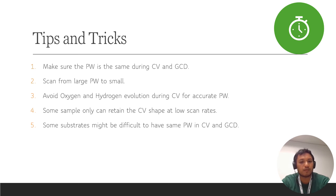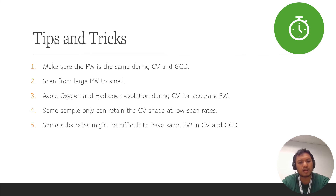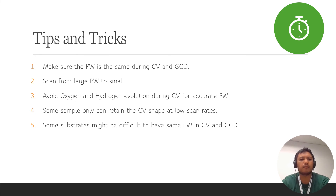Tip 3: Avoid oxygen and hydrogen evolution during cyclic voltammetry for an accurate potential window. Tip 4: Some samples can only retain their CV shape at low scan rates. Battery-type materials can only show obvious redox spikes at low scan rates, for example from scan rate 1 to maybe 10 or 20 mV/s. At higher scan rates, it is difficult for battery-type materials to show clear redox spikes. So determining your scan rate is important when studying CV shape.